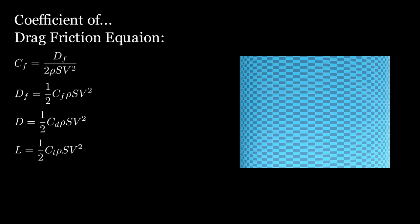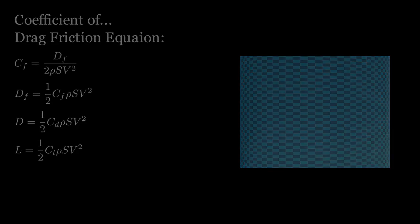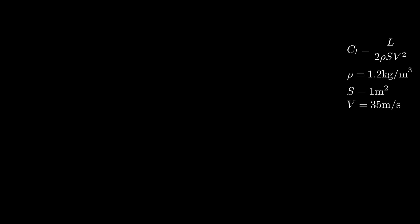Thankfully, nature can tell us what they are for a given velocity. We can rearrange the equation and solve for CL and give the airfoil some information such as air density, top view surface area, and velocity.